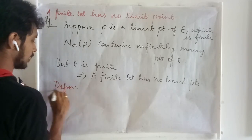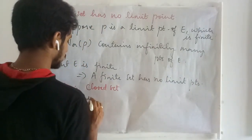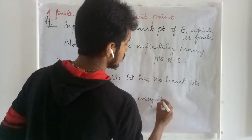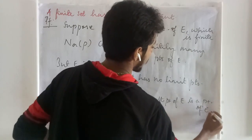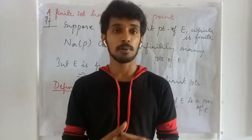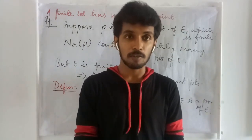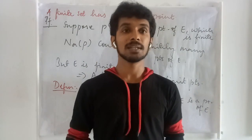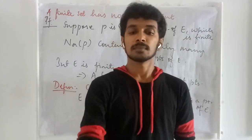Now let us define a closed set. A set E is said to be closed if every limit point of E is a member of E. Which means if a set has a limit point — whether a single limit point or more than one — all the limit points must be members of that set, i.e., those points have to be contained in that set. If it is so, then we can say that set is a closed set.